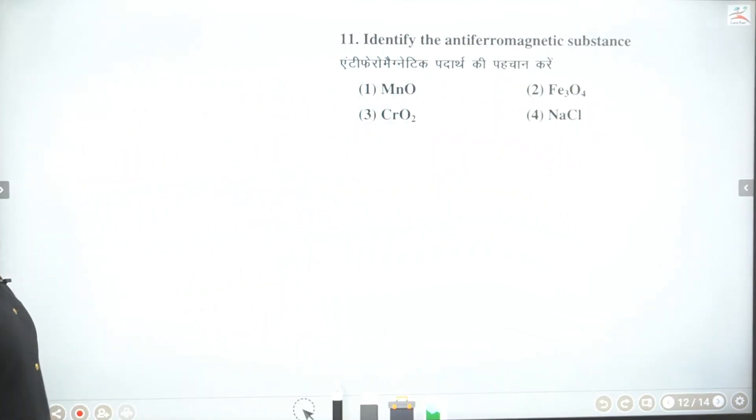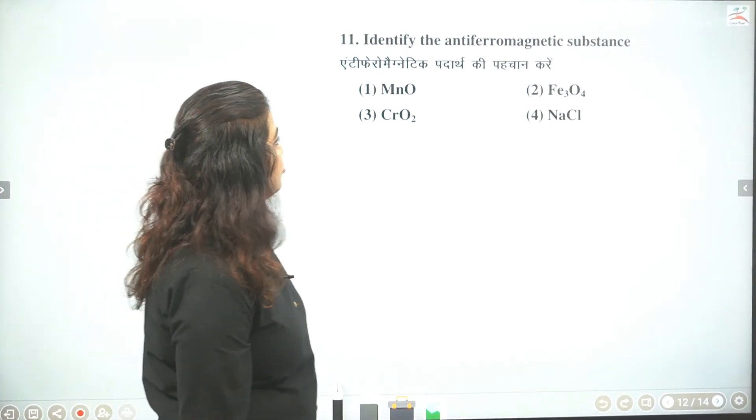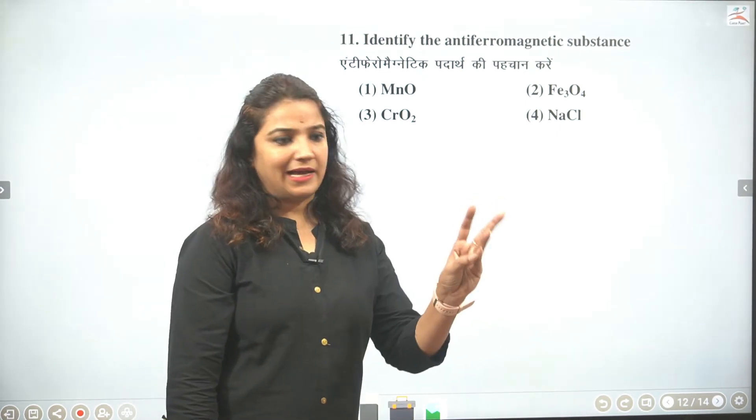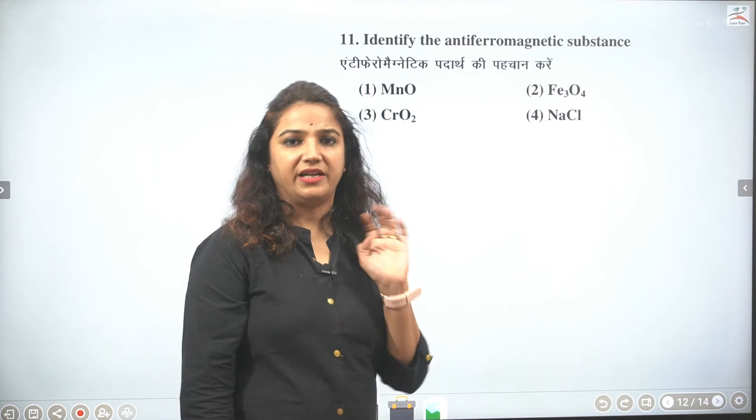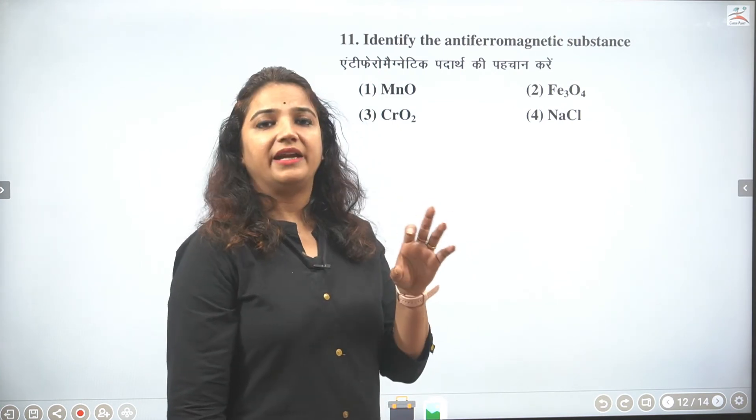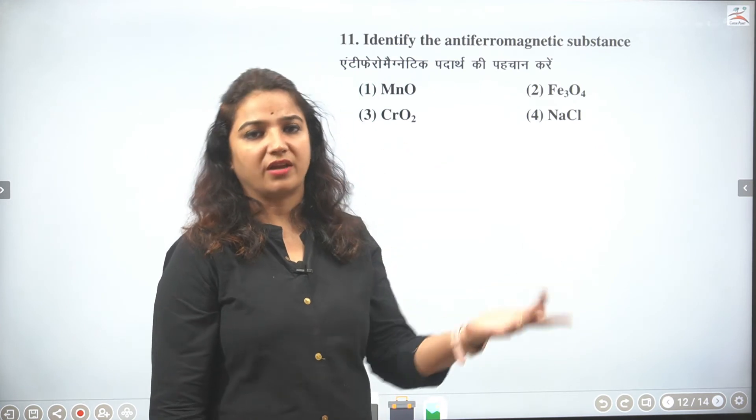Then students identify anti-ferromagnetic substance. Ab agar mein shuru karo usko dekho anti-ferro toh iron manganese ke jo oxide hai. They are anti-ferro. Thik hai. Jis mein anti-ferro bilkul bhi hai na magnetic moment aapko nahi milega. Zero magnetic moment aapko milega.